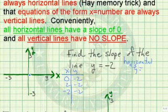So we have (0, negative 2), (2, negative 2), (negative 2, negative 2). So our line will be this horizontal line, y equals negative 2.